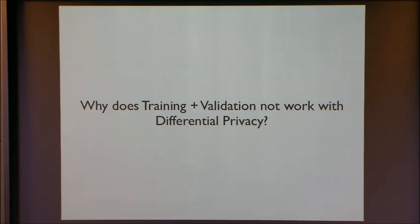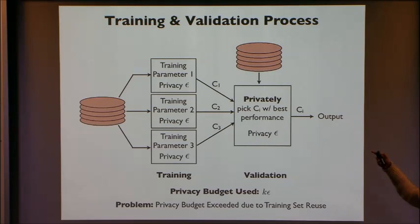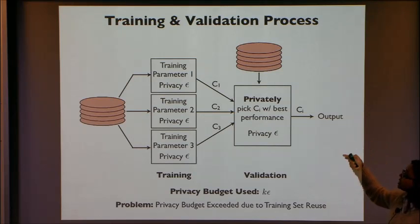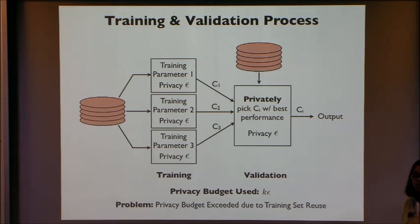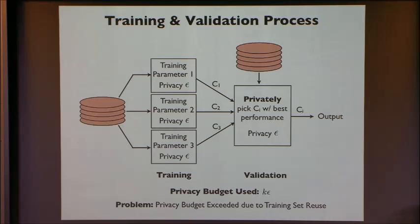So why is training and validation a problem when we try to do it with differential privacy? Here we are trying to do everything with differential privacy. Each training step uses privacy budget epsilon, and we are training for K parameter values — K times. The problem is that we are using the training data a whole bunch of times — K times for K parameter values. As a result, the privacy budget used up is K-epsilon, whereas we were hoping to get away with epsilon.